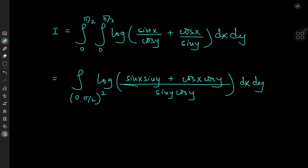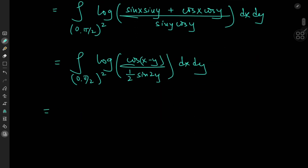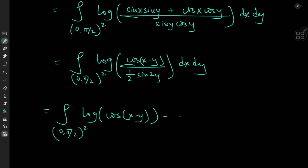And here's where the knowledge of trigonometry comes in handy. We can write this as the double integral over the region zero to π/2 squared of log of — the numerator is cosine(x − y), and the denominator is one half of sine 2y. And now using the properties of the logarithm, we can write this as the double integral over zero to π/2 squared of log cosine(x − y) minus the logarithm of one half — or plus the logarithm of two — minus the logarithm of sine 2y, dx dy.